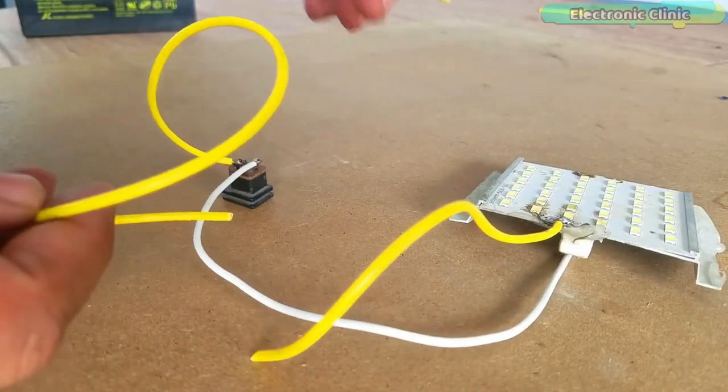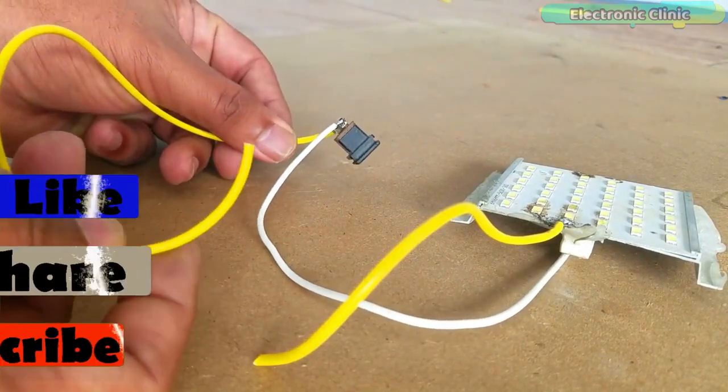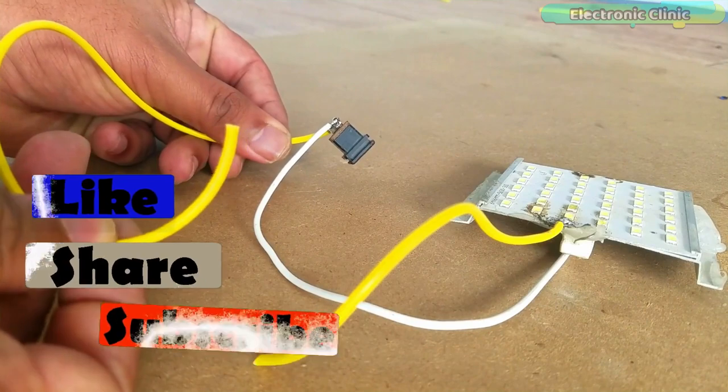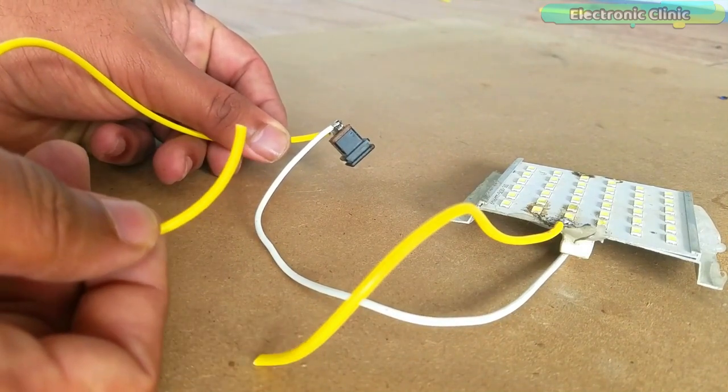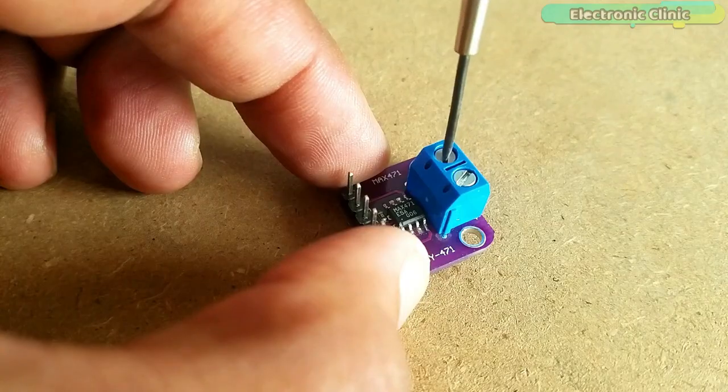To connect this LED module with the MAX471 module, cut the voltage wire. Connect the voltage wire coming from the power supply with the RS plus terminal of the MAX471 and the other wire with the RS minus terminal of the MAX471.